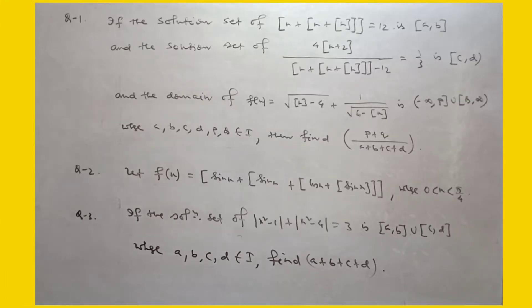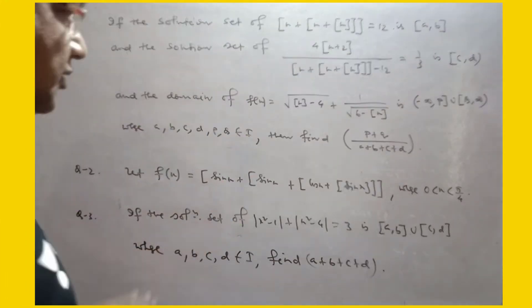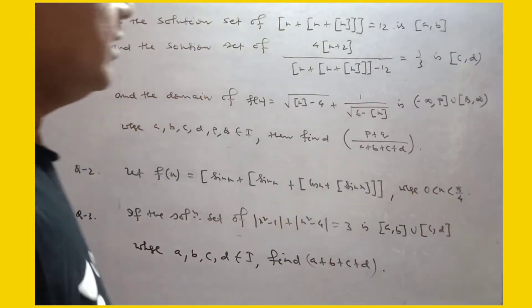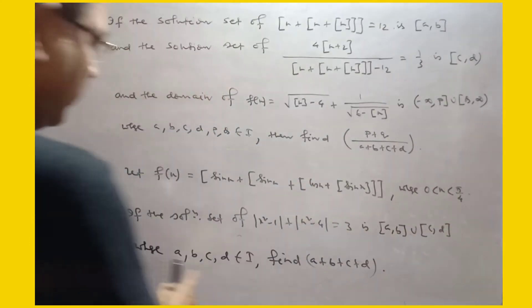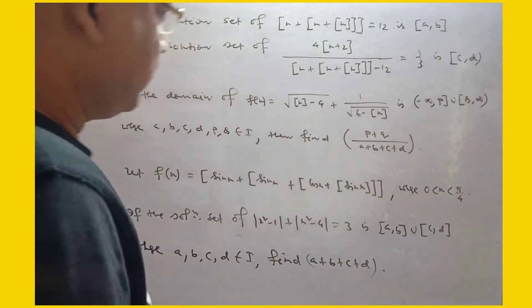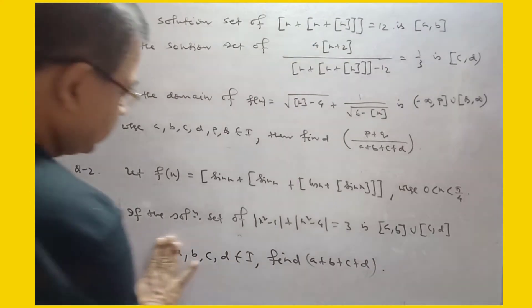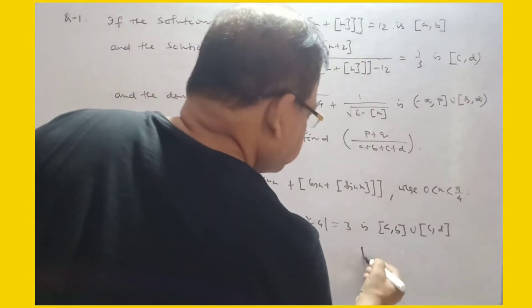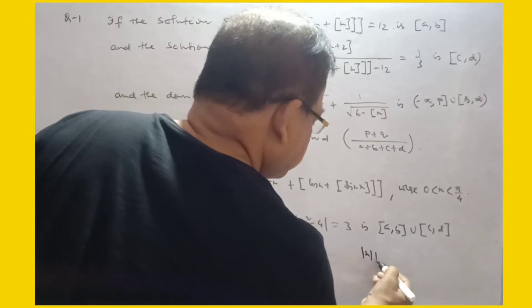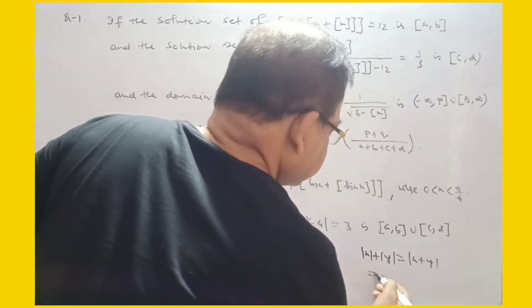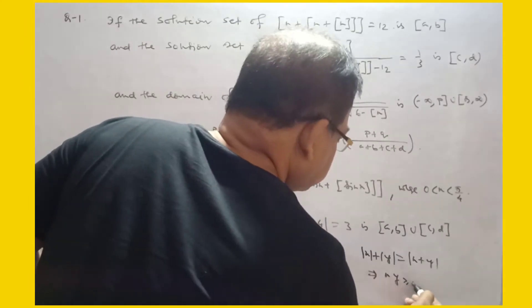So these three questions are clear. If the solution set of this is AB union CD, where A, B, C, D are integers, then find the values of this. We will apply the modulus property. What is the modulus property? Suppose mod X plus mod Y equals a — from this condition, you can draw a conclusion.